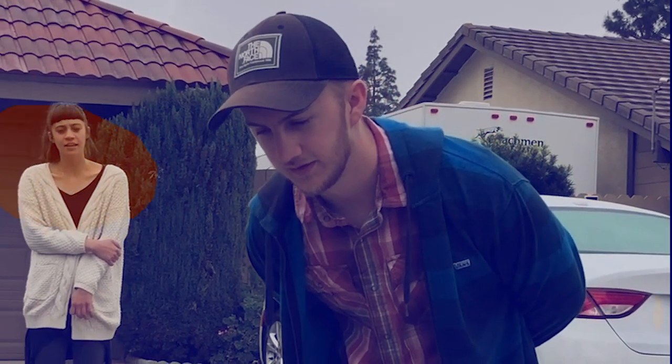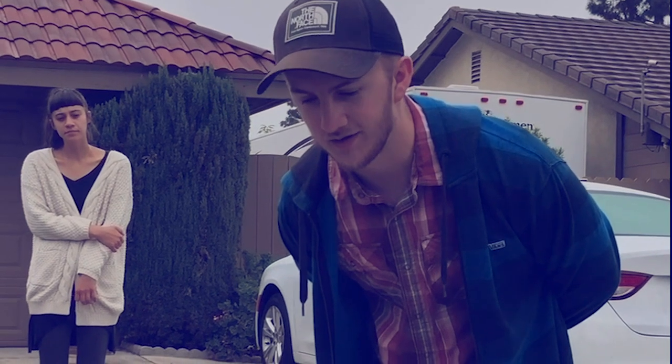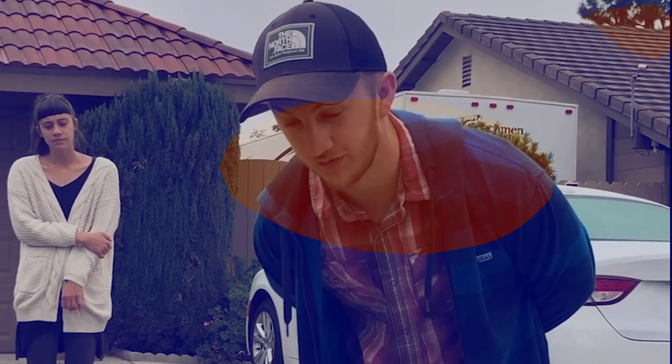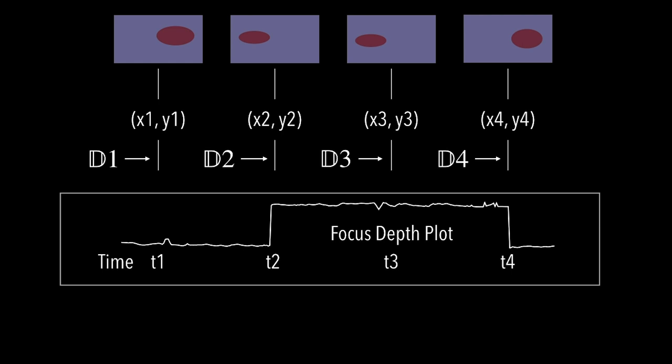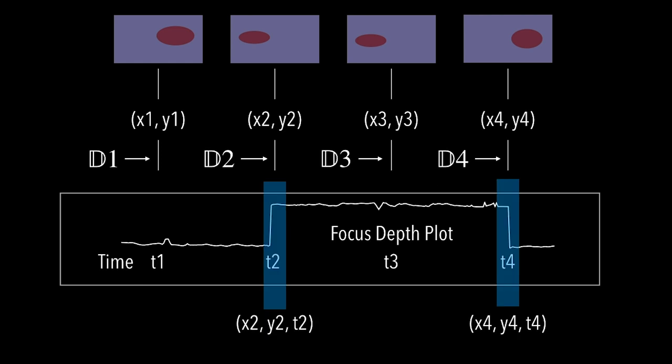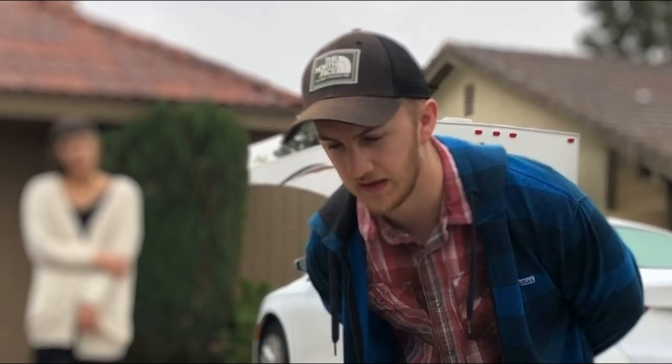Take the conversational scene as an example. We compute the intersection of the focus maps generated by the audio localizer and the face detector, compute the cluster's center, and read the depth from the predicted disparity map to generate a focus depth plot. We then apply edge-aware filtering to the 1D temporal signal to obtain temporal discontinuities. We call these the new focus targets. The result is a conversation video where the focus is always on the person who is about to speak.